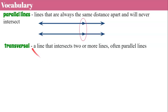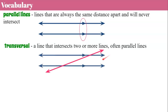A transversal is a line that intersects two or more lines, and they're often parallel lines. We're going to learn about some special and unique things when they are parallel lines. Think of train tracks and the arm that comes down to stop cars when a train is going to pass — the train tracks transverse across the street. Think of the lanes in your street as your parallel lines, and train tracks as the transversal.